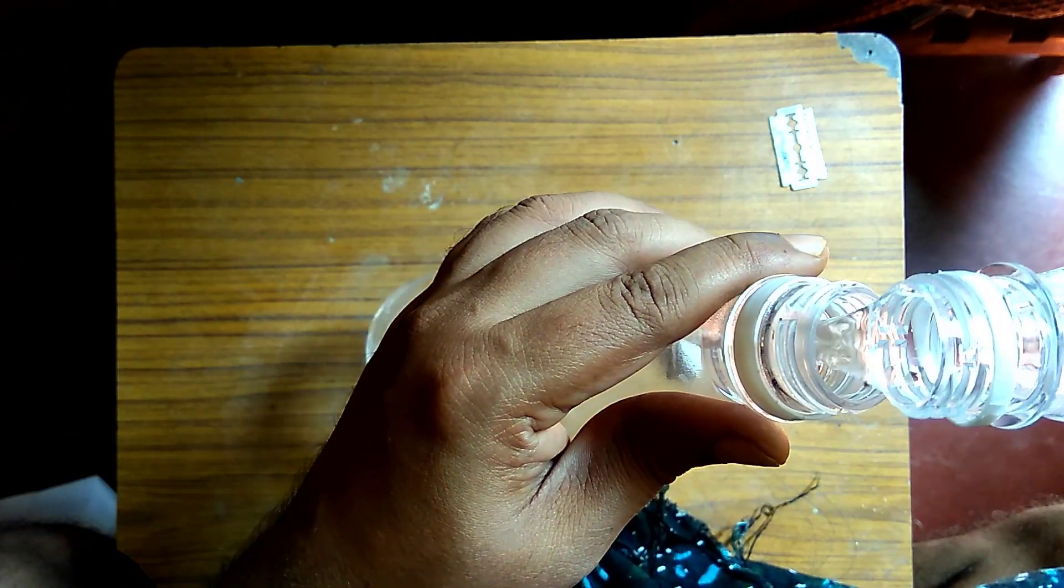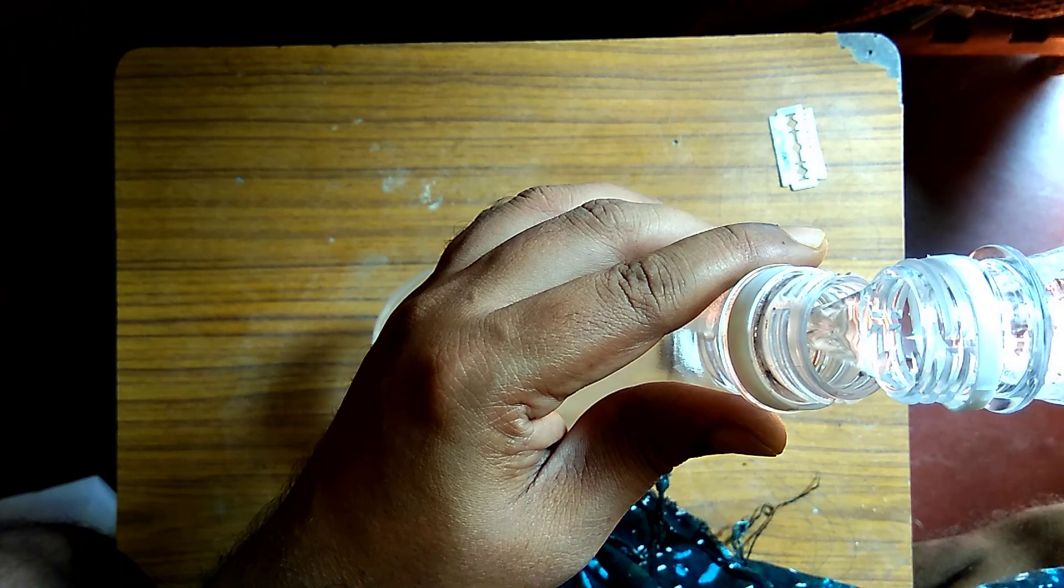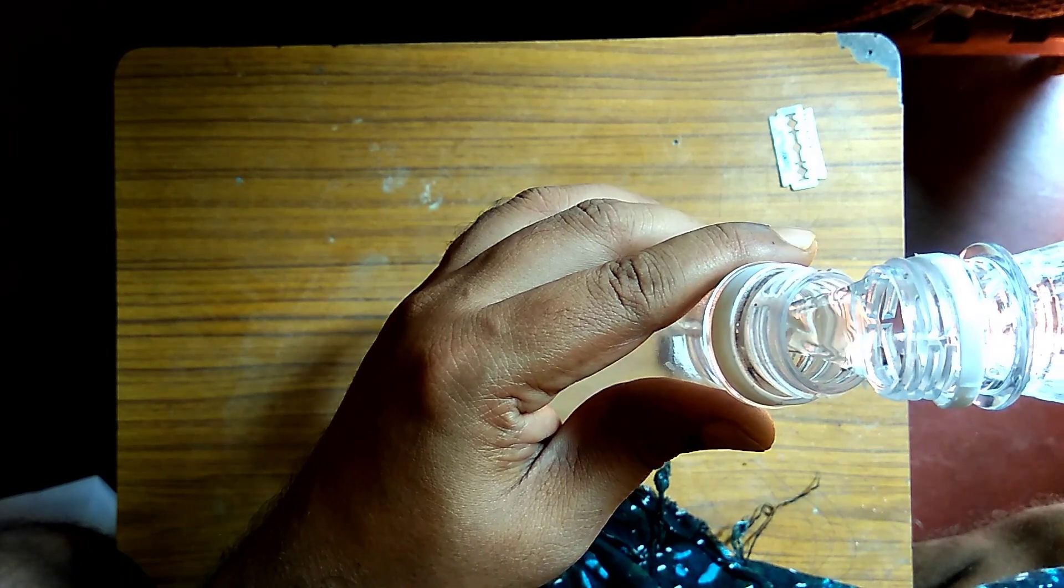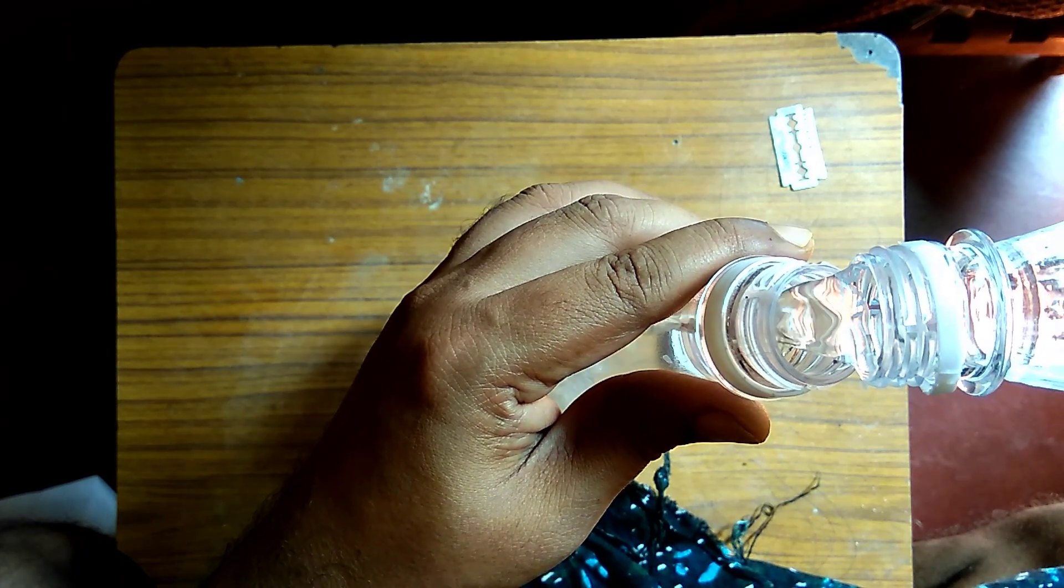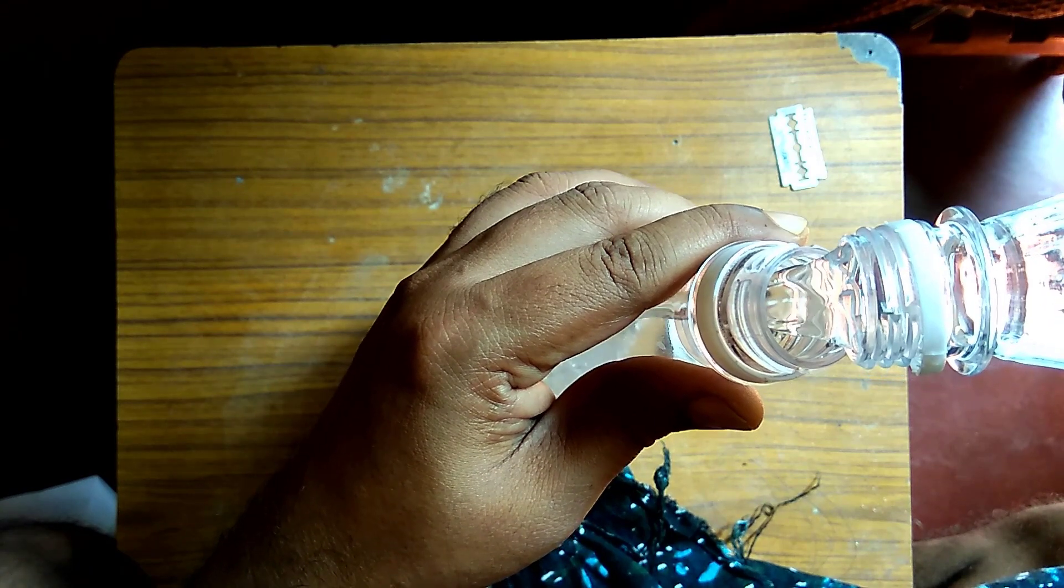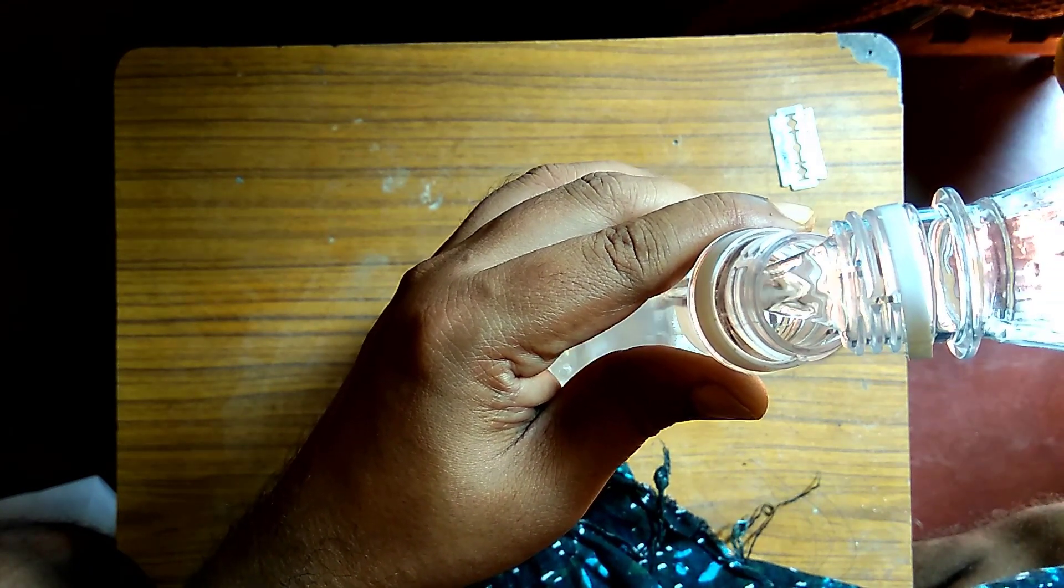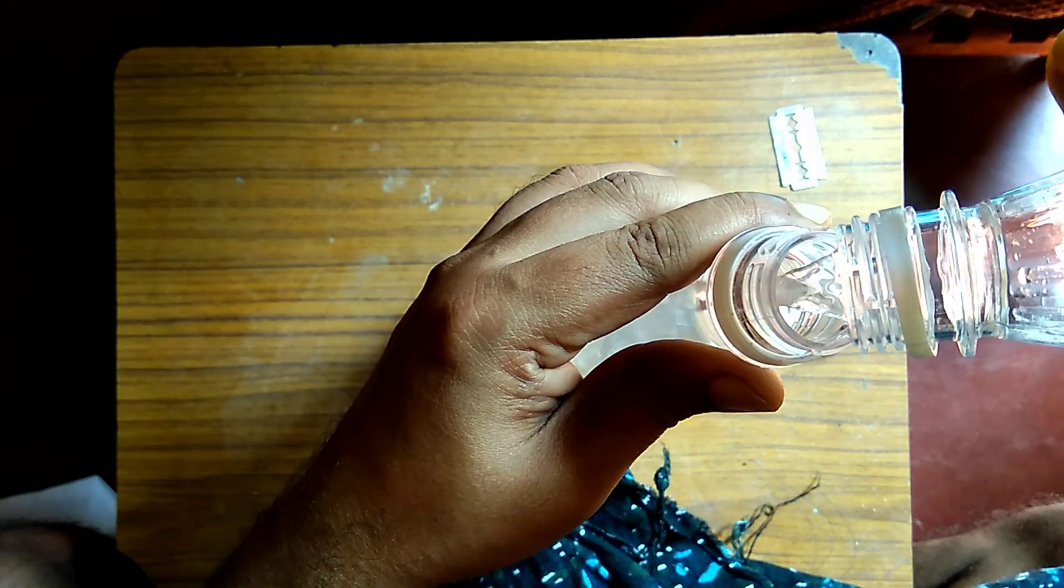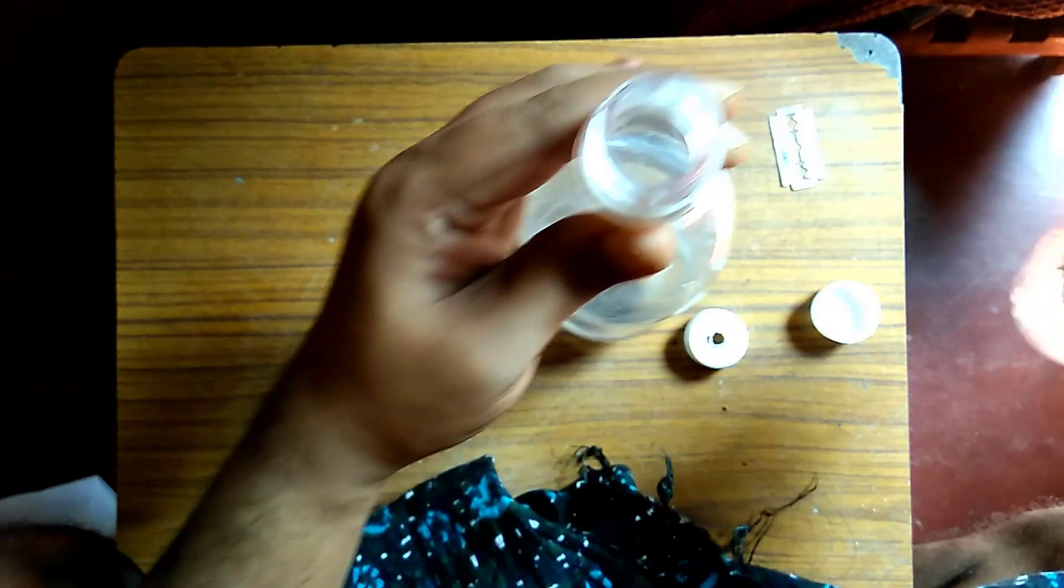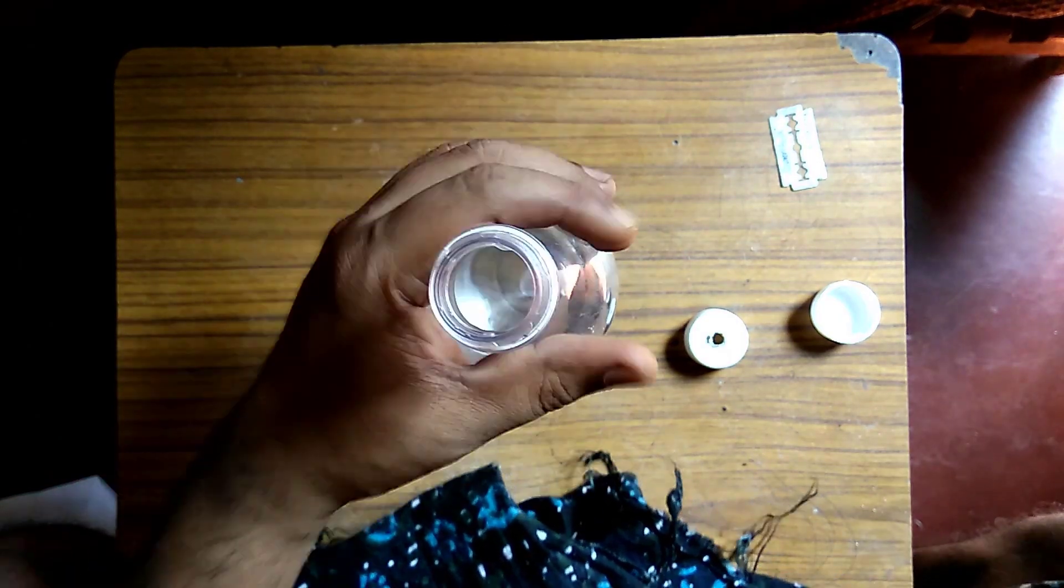We need to fill the bottle two-thirds with vinegar. Do not add water into it. Apple cider vinegar will also work out since it contains acetic acid. So you can see we have two-thirds filled with vinegar.